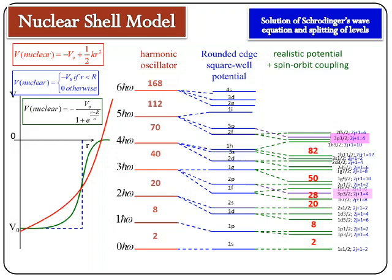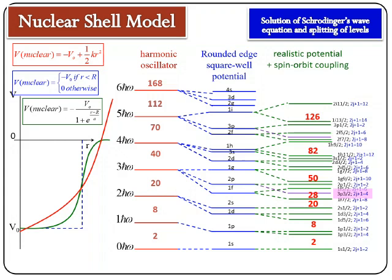There is again a penetrating energy level at 3p_{3/2}, which goes below 2f_{5/2}. The 1i energy level splits into 1i_{13/2} (j = l + ½) and 1i_{11/2} (j = l − ½). Considering spin-orbit coupling in addition to a realistic potential, we can very naturally explain the occurrence of all magic numbers.